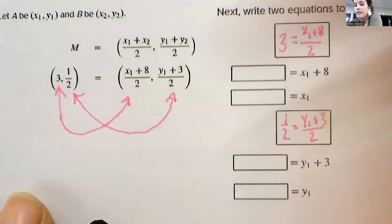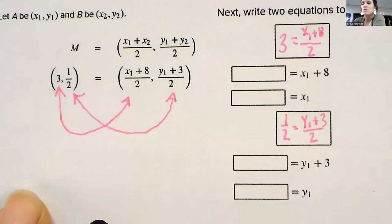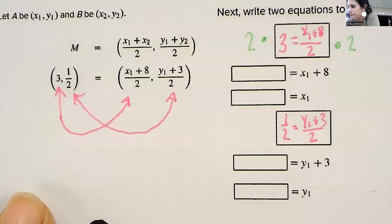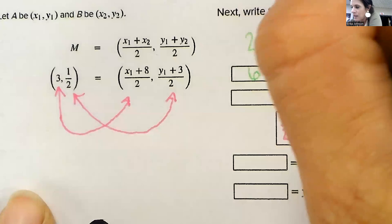So the first step to solving, and these steps will always be the same. So once we have an example down on our notes page, you can follow it. You just multiply by 2 on both sides. So you multiply by 2, that gives you 6. And then subtract that 8 over. And that will give you negative 2 for x1.